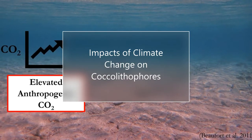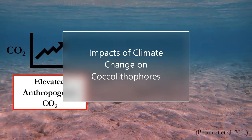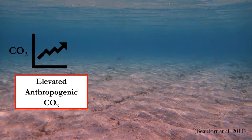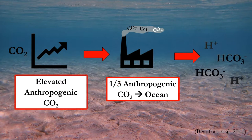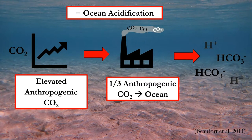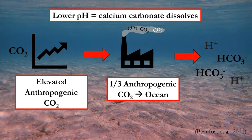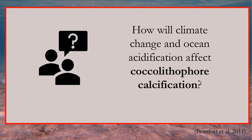Research not only explores the impacts of coccolithophores on climate, but the impact climate change has on coccolithophores. Over the years, the rapid impact of elevated anthropogenic CO2 on the carbonate system in the oceans has been demonstrated. Approximately one third of anthropogenic CO2 released into the atmosphere has been absorbed by the oceans, where it partitions into the constituent ions of carbonic acid. This leads to ocean acidification, one of the major threats to marine ecosystems and particularly to calcifying organisms such as coccolithophores, as calcium carbonate dissolves at lower pH conditions. Thus, particular attention has recently been focused on understanding how climate change and ocean acidification will affect coccolithophore calcification.